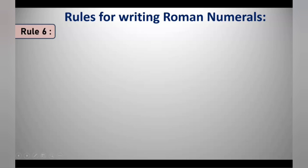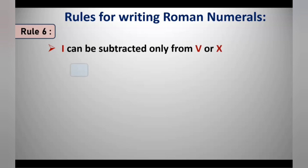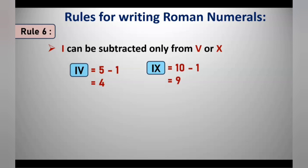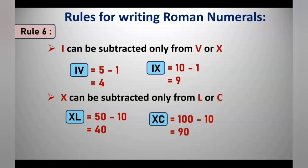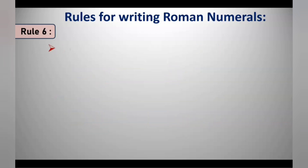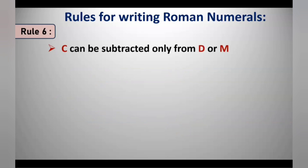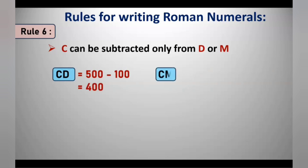Rule 6: I can be subtracted only from V or X — so you can write IV (5 minus 1 = 4) or IX (10 minus 1 = 9). X can be subtracted only from L or C — so you can write XL (50 minus 10 = 40) or XC (100 minus 10 = 90). C can be subtracted only from D or M — so you can write CD (500 minus 100 = 400) or CM (1000 minus 100 = 900).